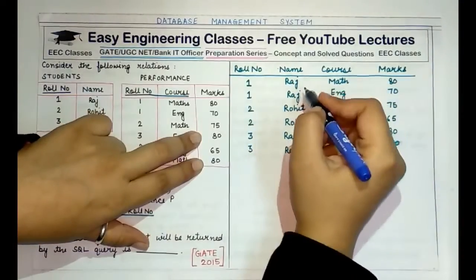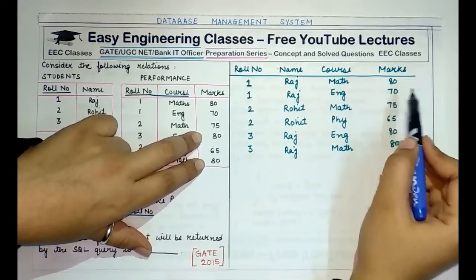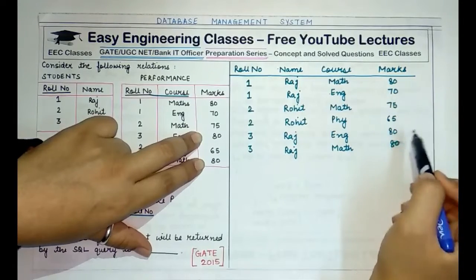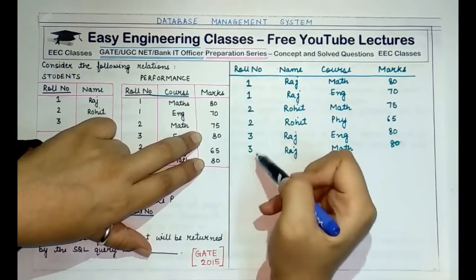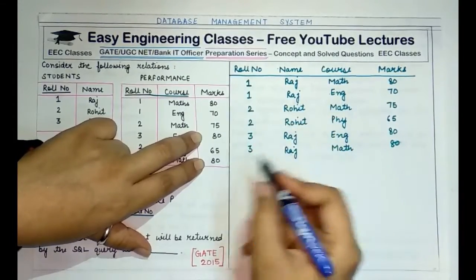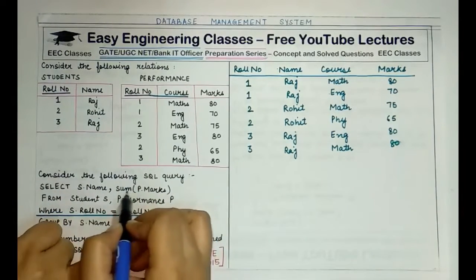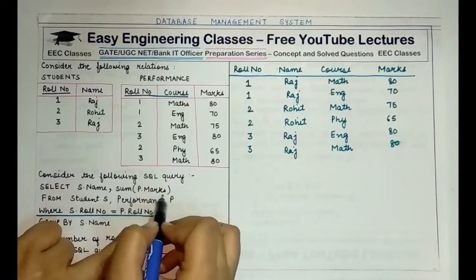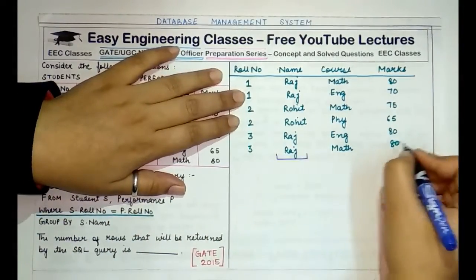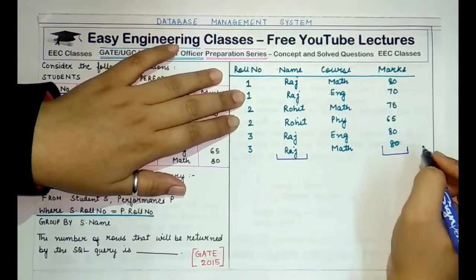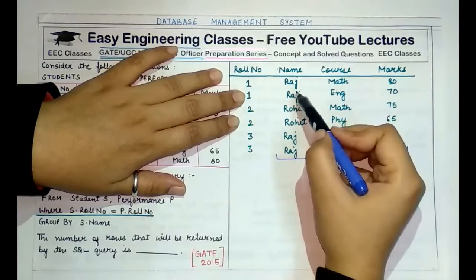One name is Raj. The marks corresponding to Raj are 80, 70, 80, and 80. Note that the role number column is not being selected, so after the natural join only the columns name and SUM(p.marks) are selected.